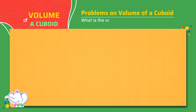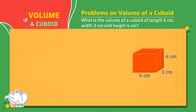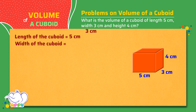What is the volume of a cuboid of length 5 cm, width 3 cm, and height 4 cm? Length of the cuboid equals 5 cm. Width of the cuboid equals 3 cm. Height of the cuboid equals 4 cm.